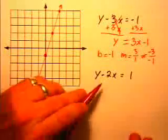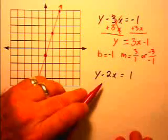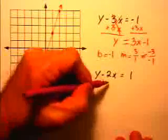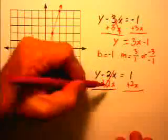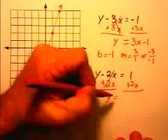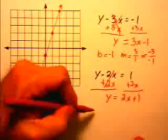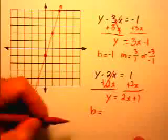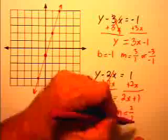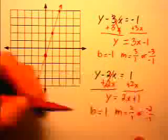Moving on to the second equation, we have the same problem: we need to put it in slope-intercept form. Using the same solution, we get y equals 2x plus 1. The y-intercept b equals 1, and the slope m equals 2 over 1, or negative 2 over negative 1.